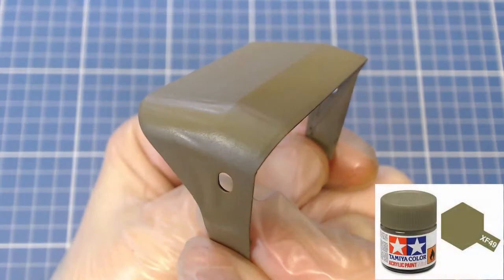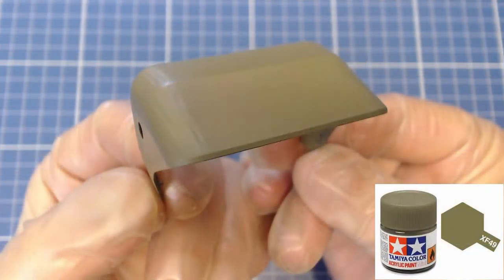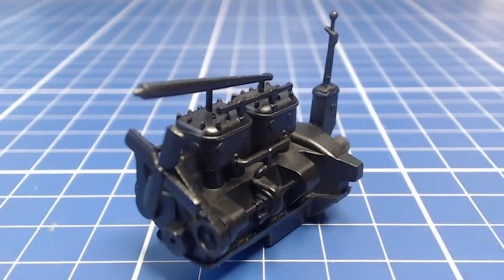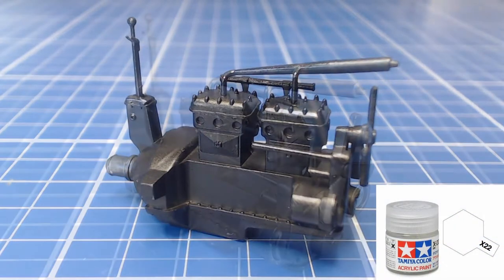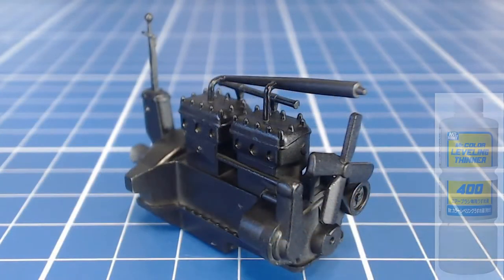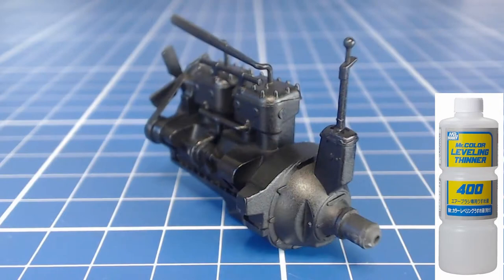The cab canvas cover gets a coat of Tamiya XF 49 khaki acrylic. Here the trucks engine is sporting its black enamel base coat. We can then spray the engine and all of our other parts with a clear gloss acrylic. I used Tamiya's X22 thinned with Mr Color leveling thinner.